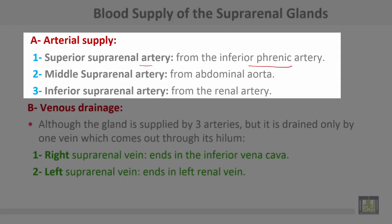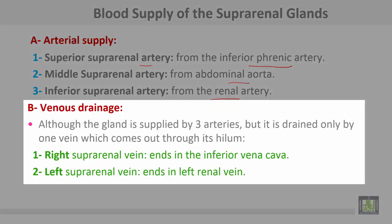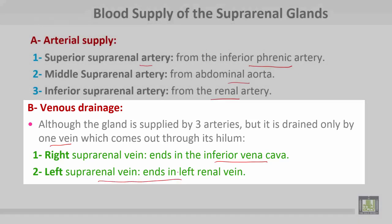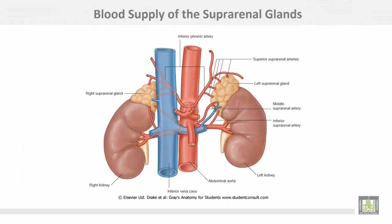The blood supply of the suprarenal glands: arterial supply comes from three sources — the superior suprarenal artery from the inferior phrenic artery, the middle suprarenal artery from the abdominal aorta, and the inferior suprarenal artery from the renal artery. For venous drainage, although the gland is supplied by three arteries, it is drained by only one vein which comes out through its hilum. On the right side, the right suprarenal vein ends in the inferior vena cava, while the left suprarenal vein ends in the left renal vein.